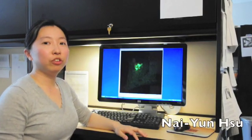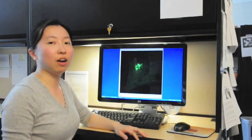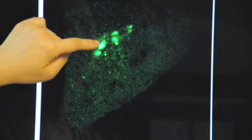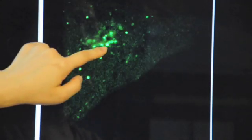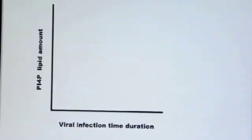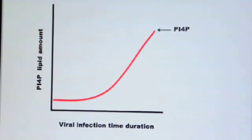We can watch the generation of PI4p lipid-enriched organelles in real-time in living cells infected with Coxsackievirus. Here are host cells expressing a GFP-tagged protein, which binds to PI4p lipids in membranes. As the infection proceeds, we find more organelles enriched in PI4p lipids appearing. We have found that the level of PI4p lipids goes up dramatically within cells during infection with Coxsackievirus, poliovirus, as well as hepatitis C virus.